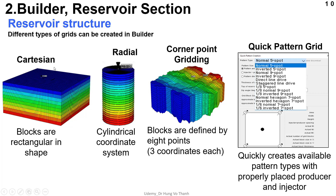Now we would like to talk about the reservoir structure in CMG. CMG is one of the robust simulation models because you can view the diversity of grid types, such as Cartesian. This is one of the simple grid models you can use for your simulation data. If you have field data, you can use a simple model and perform analog studies for reservoir simulation. The Cartesian grid is represented in a rectangular shape.